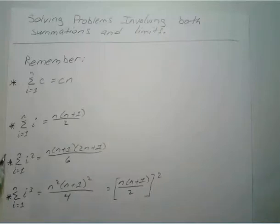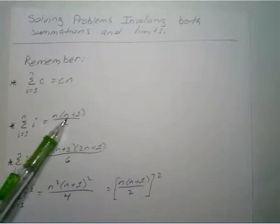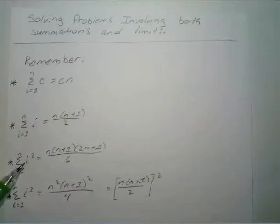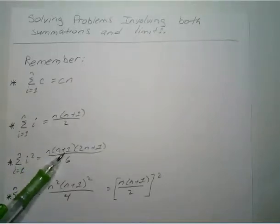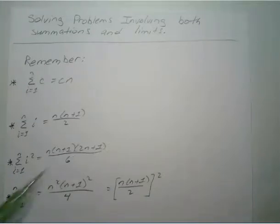If you have the sum from i equals 1 to n of just i, that's going to equal n times n plus 1 divided by 2. If you have the sum from i equals 1 to n of i squared, that's going to equal n times n plus 1 times 2n plus 1 divided by 6.